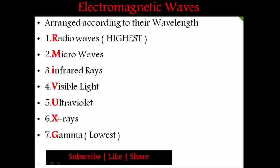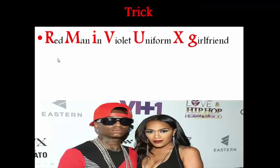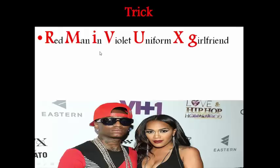All these letters are different and not repeated. The trick sentence is: 'Red Man In Violet Uniform With Ex-Girlfriend.' Here, Red = Radio waves, Man = Microwaves, In = Infrared rays, Violet = Visible light, Uniform = Ultraviolet rays, X = X-rays, Girlfriend = Gamma rays. Try to remember this sentence so you can easily recall all the waves in the right order.